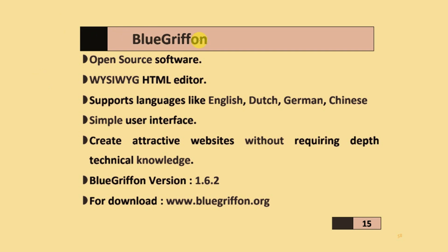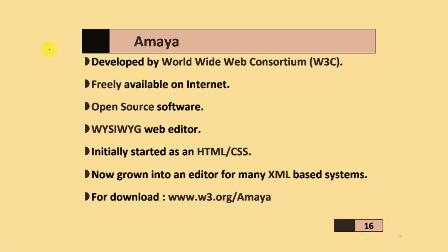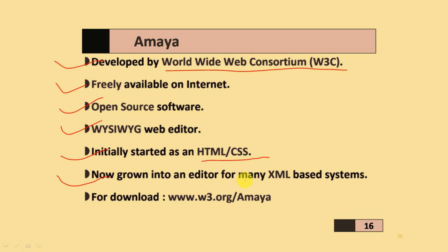The next software is BlueGryphon, an open source web software based on a WYSIWYG HTML editor. It supports different languages like English, Dutch, German, and Chinese. It has a simple user interface and creates attractive websites without requiring in-depth technical knowledge. The BlueGryphon version is 1.6.2, and you can download it from BlueGryphon.org. The next one is Amaya, developed by the World Wide Web Consortium — W3C. It is freely available on the internet and is open source software. It is a WYSIWYG-based web editor, initially started as an HTML and CSS editor, now grown into an editor for many XML-based systems. You can download it from W3.org/Amaya.